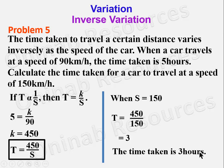The time taken at a speed of 150 kilometers per hour is 3 hours. Remember to always include units where units are given. Thank you for watching this video — this is the end of the tutorial. I hope you enjoyed it. Do check the description section of this video on our YouTube channel to get links to other videos on variations. Goodbye.